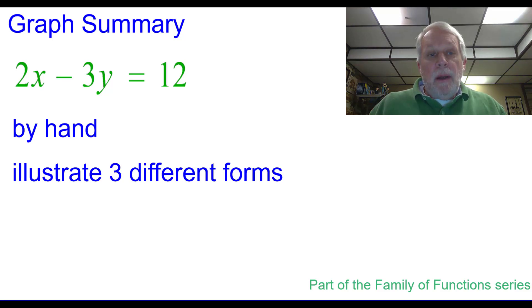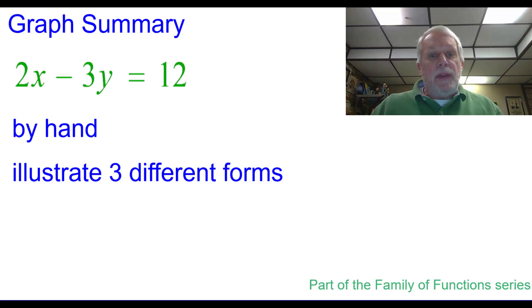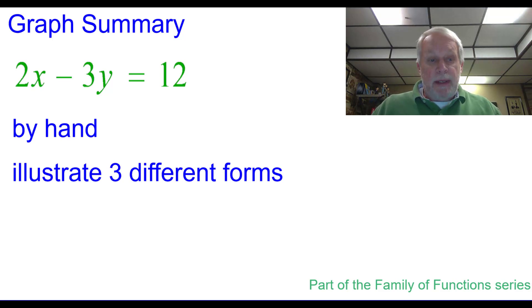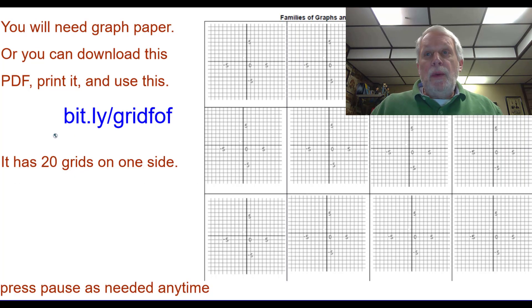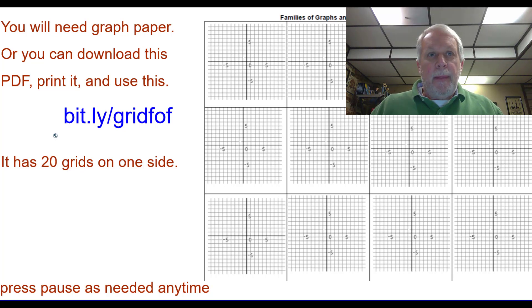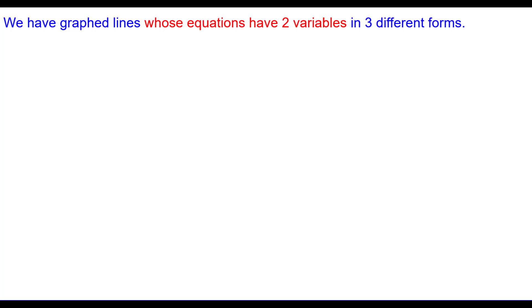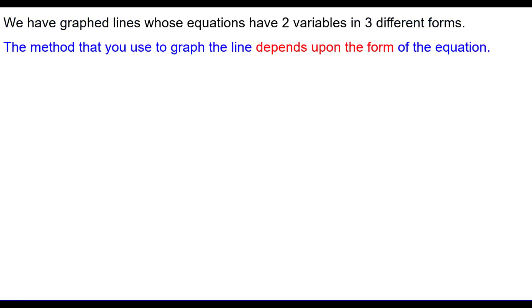This is a graph summary. We're going to graph 2x minus 3y equals 12 by hand and illustrate three different forms of equations. This is part of the family of functions series. You will need graph paper, or you can download this PDF and print it. We have graphed lines whose equations have two variables in three different forms. The method that you use to graph a line depends upon the form of the equation. Let's have a quick review or summary of the three forms.